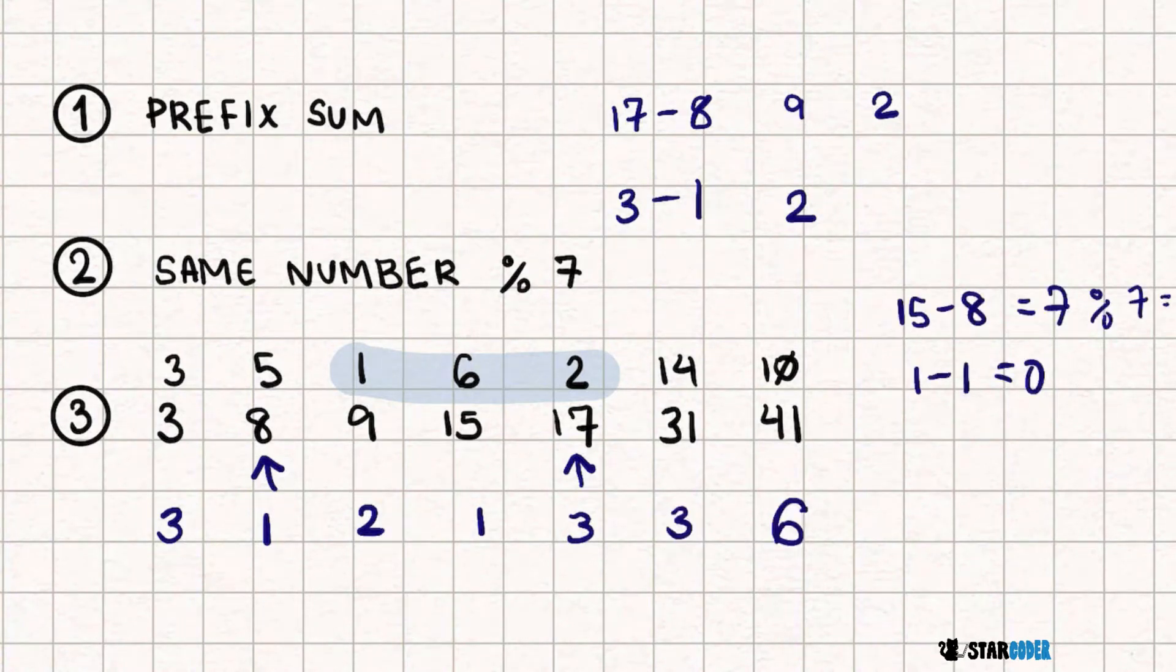With this new mod 7 list of our prefix sum, we know that for any two values with the same modulo, the range in between is going to be divisible by 7. And so in order to maximize this range, obviously we're going to need to find the first and the last of each one of these values. And so for mod 1, that would be here and here, making it a total of 2. For mod 2, it would be from here, and then since there's nothing else, we wouldn't do anything. For mod 3, it would be here and then here.